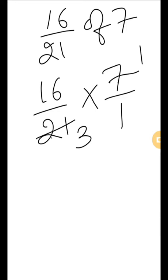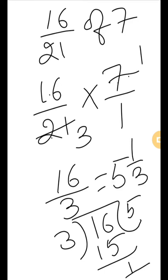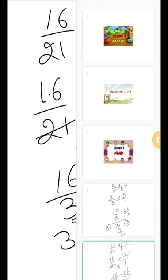Now convert the answer to mixed fraction. 16 divided by 3. 3 fives are 15, 16 minus 15 is 1, so 1 is the remainder. The answer in mixed fraction is 5 and 1/3. Now see next question.